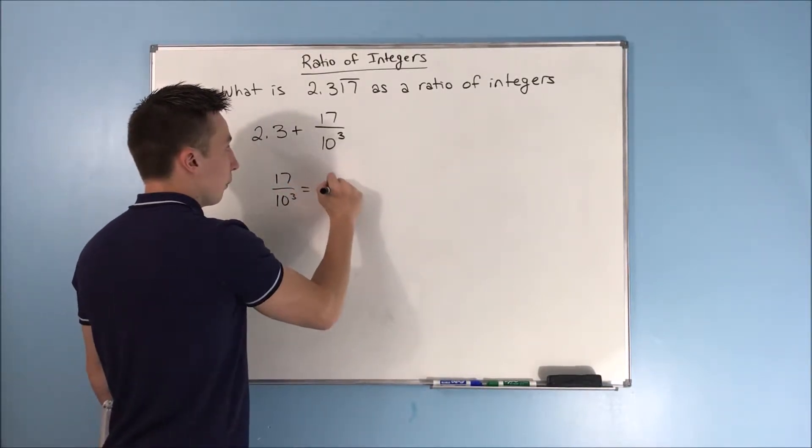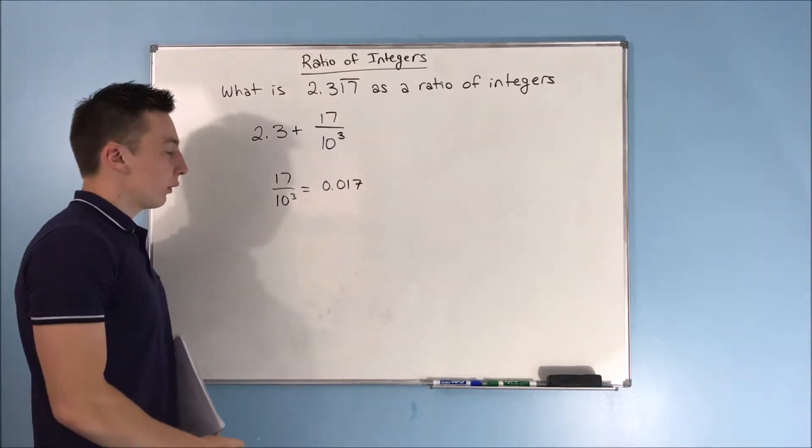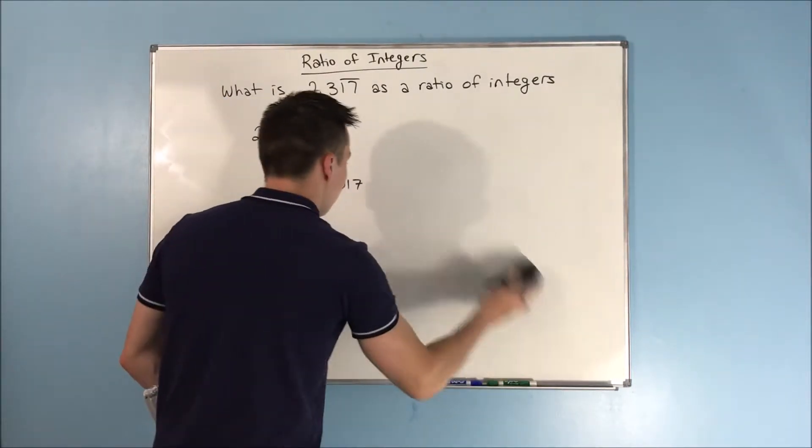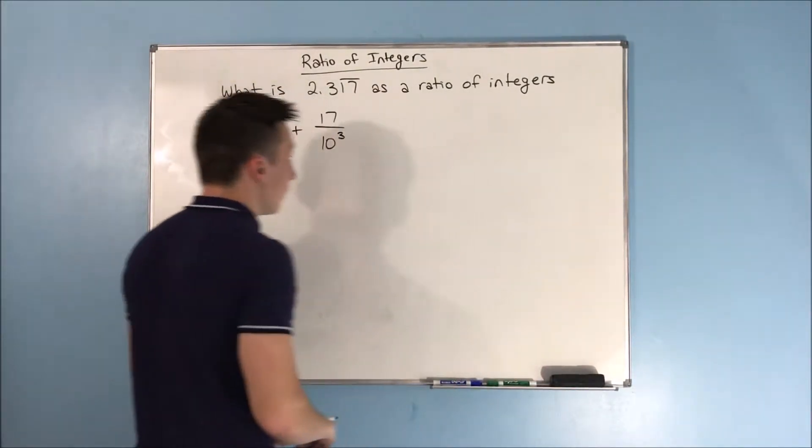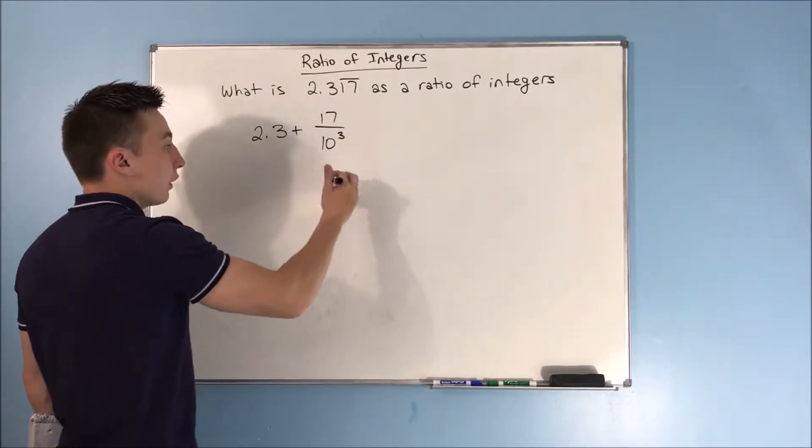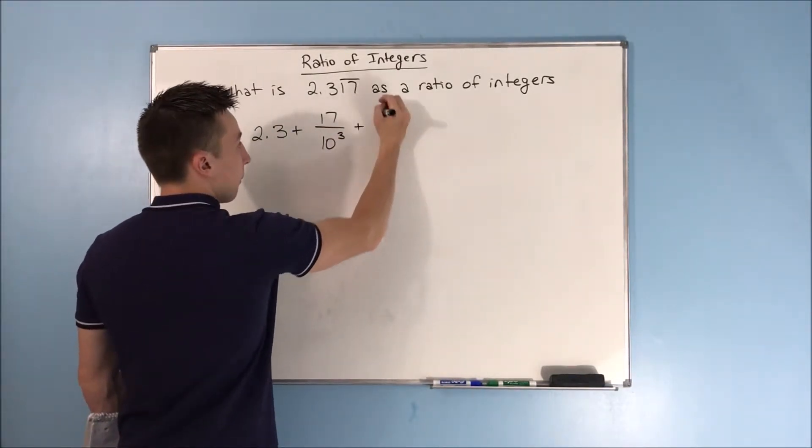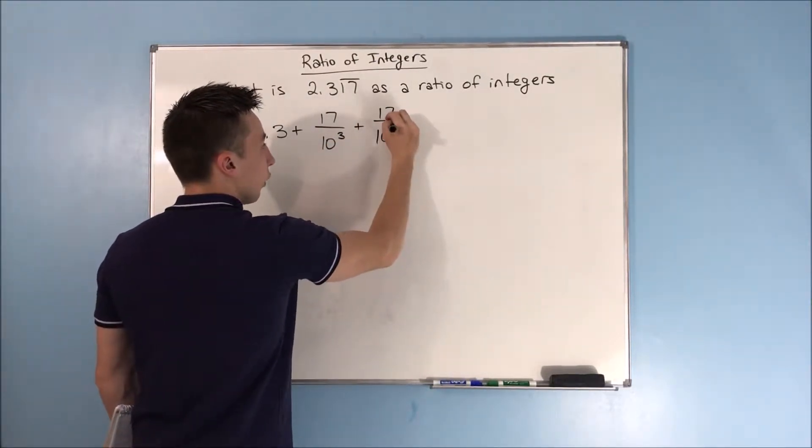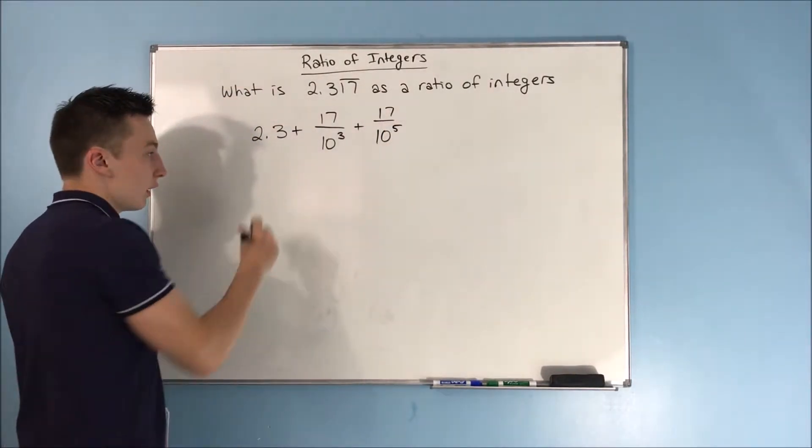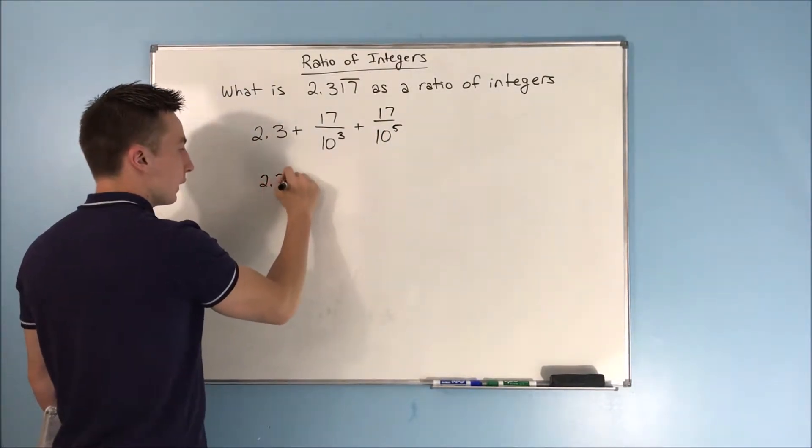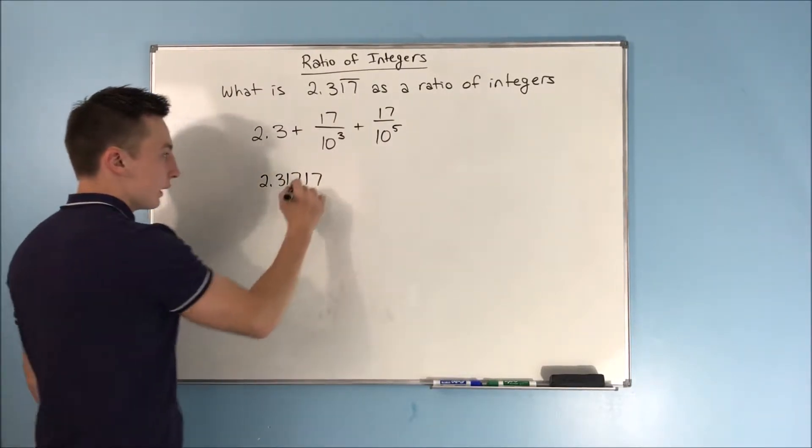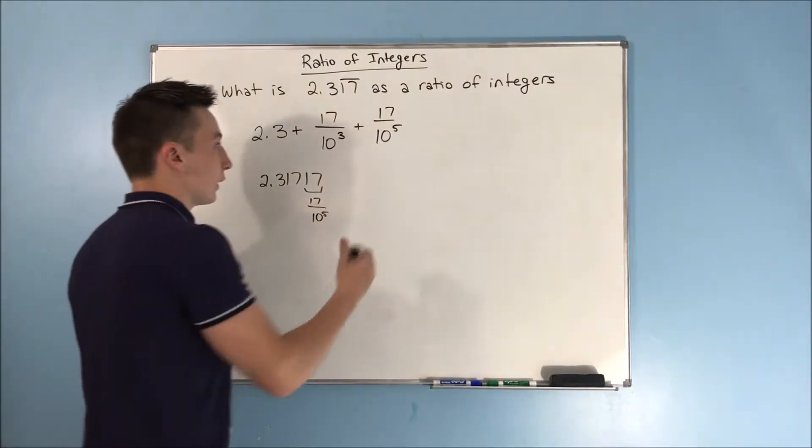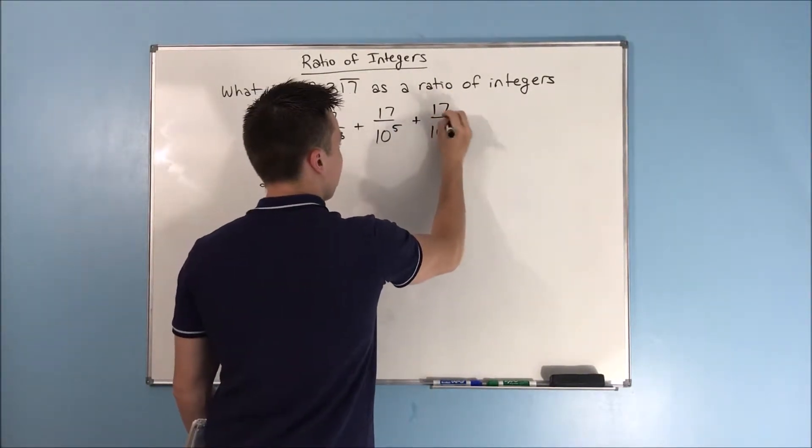Now this is a repeating decimal, so this 17 over 10³, we're repeating this. So the next snippet is going to be 17 over 10⁵, so now what we have is 2.31717. Let's go another one: 17 over 10⁷.